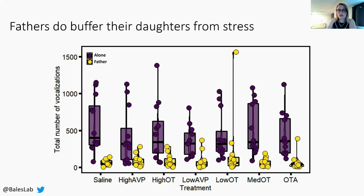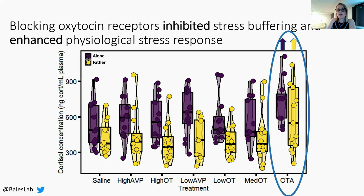For our social separation study, we found that fathers were able to successfully buffer their daughters from stress, as evidenced by lower levels of separation distress vocalizations — noted on the y-axis — with their father in yellow compared to alone in purple, across all treatment groups noted on the x-axis. Treatments did not significantly impact vocalizations. However, when we analyzed our plasma cortisol data, we found that plasma cortisol was statistically significantly higher when females were treated with the oxytocin antagonist, noted OTA, both with their father in yellow and alone in purple. These findings suggest that blockade of oxytocin receptors inhibits stress buffering by the father and enhances physiological separation distress.